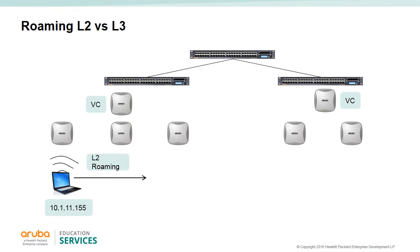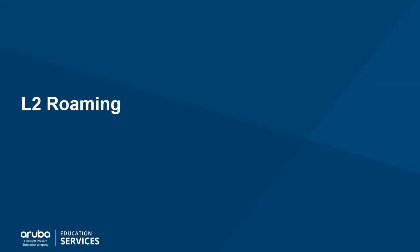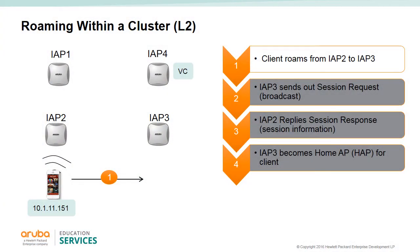Doing so in a single virtual cluster is simple, since all APs advertise the same SSID and clients are placed in the same subnet. No configuration is needed for roaming within a virtual cluster. However, if the client is roaming to an AP that is part of another virtual cluster and roaming is still desired, then the home AP table must be configured.